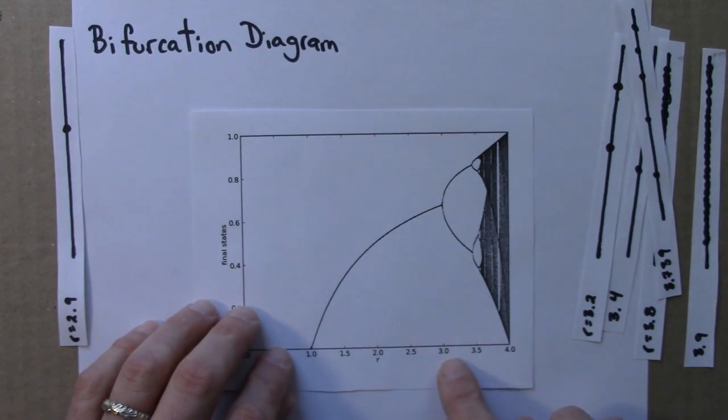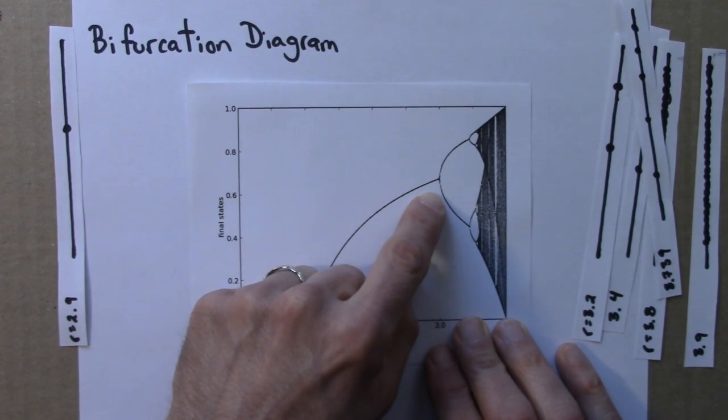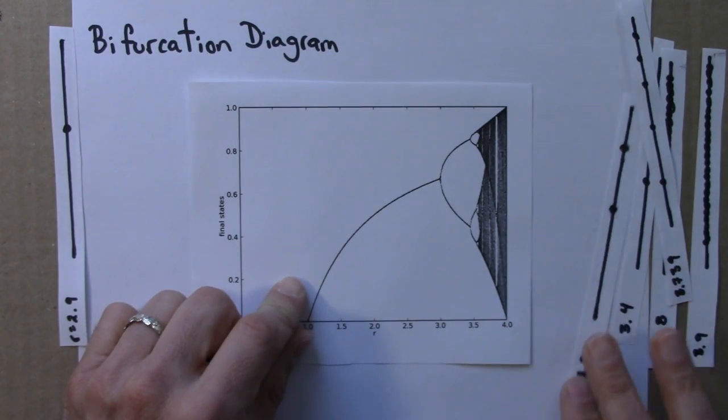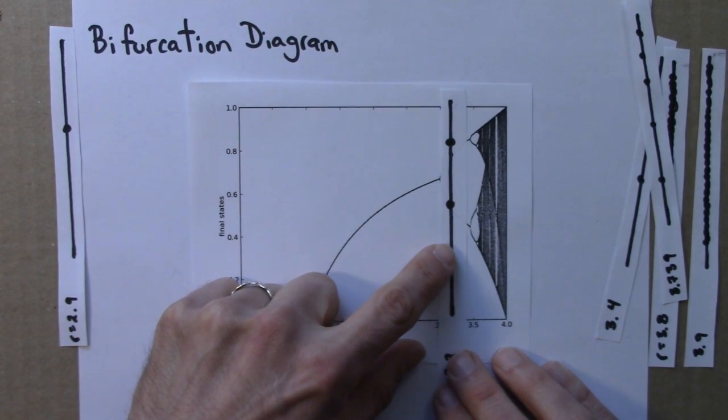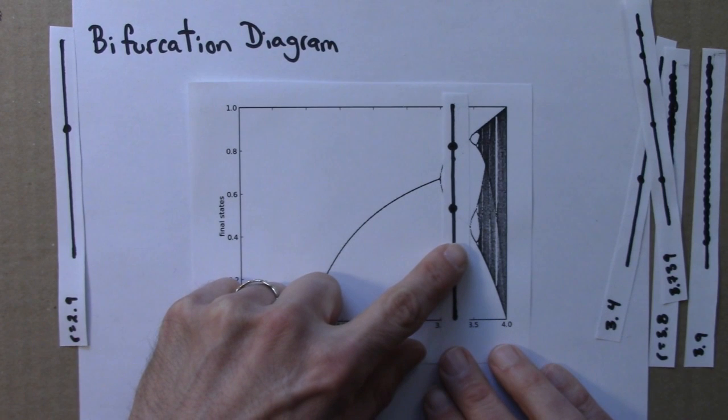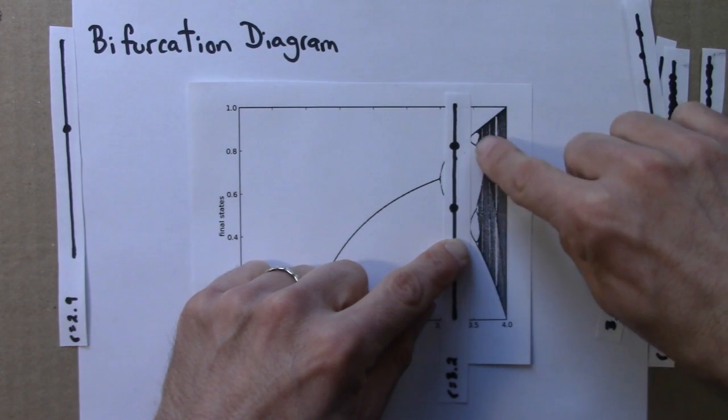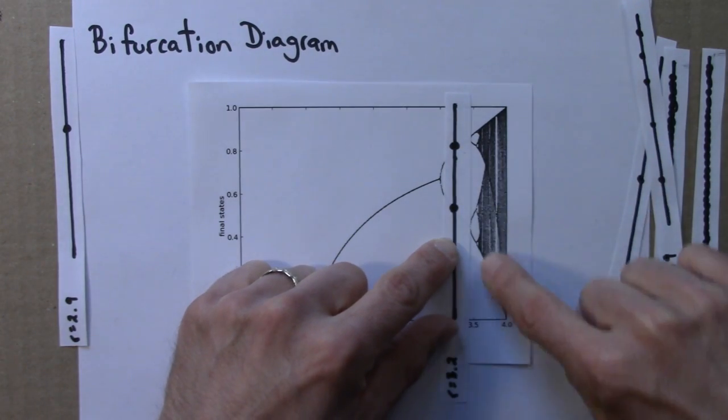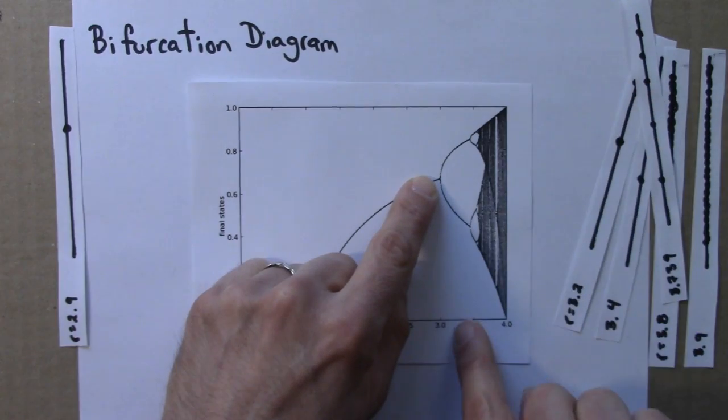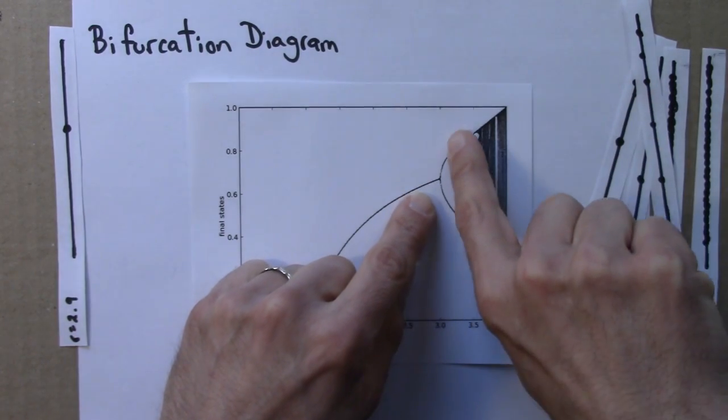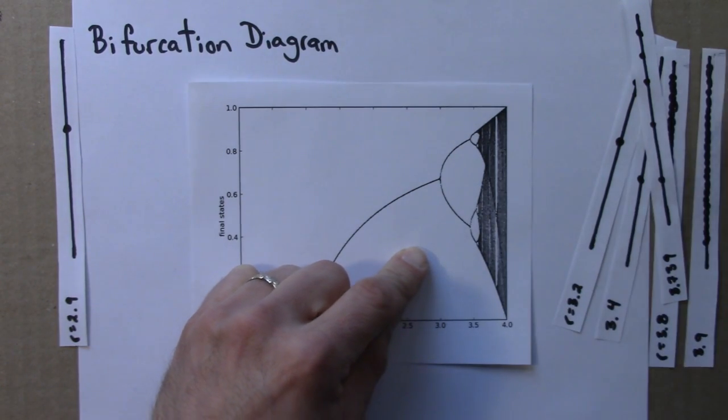Then, as R is increased, as the growth rate gets larger and larger, the period 1 behavior splits into period 2. And we've seen that. Here's R equals 3.2. So the two dots from the final state diagram show up as part of this line here. So in this region, where if I go up from a single point, I see two lines, two dark regions, that would indicate that it's period 2.